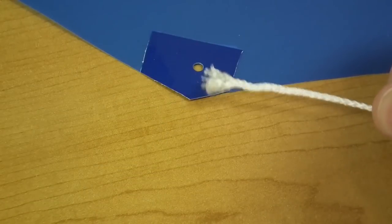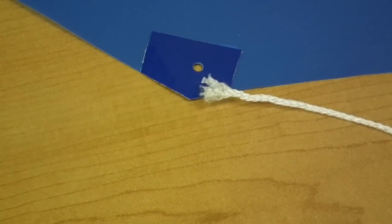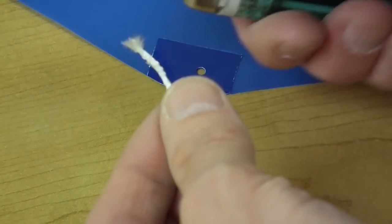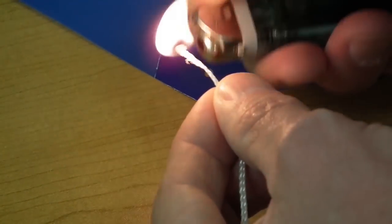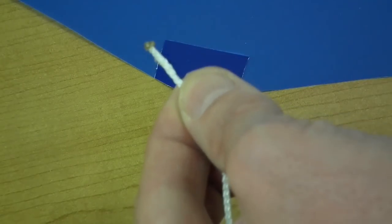You might find that the ends of your string are frayed. If it's nylon string, you can fix this by using a cigarette lighter to melt the ends of the string. It keeps it from fraying and coming apart.